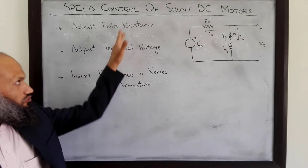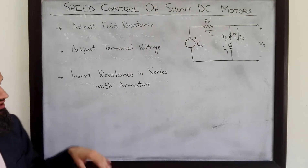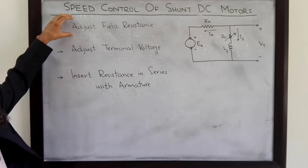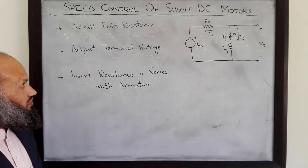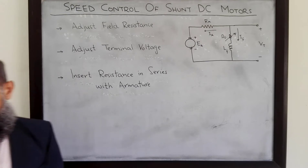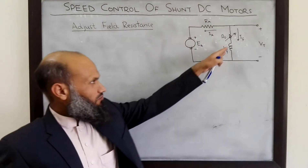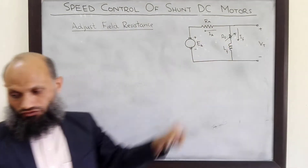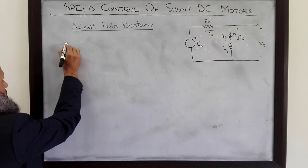We shall talk about these three methods in more detail one by one. We start with the first approach to control the speed of a shunt DC motor. What will happen if, for example, we increase the field resistor?